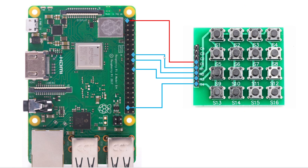A little bit about how I've made my connections. I have this 4x4 button matrix which has 16 buttons, so I can generate up to 16 inputs at the same time, but I'm working with just four — the first four buttons. As you can see, it has eight pins where you can make connections from.